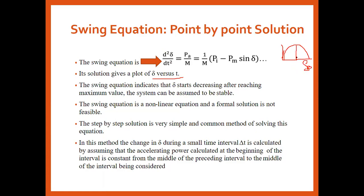We are getting the maximum power at delta_max, starting from delta_zero. This indicates the system is searching for a stable point. However, the swing equation is a non-linear equation, so a normal closed-form solution is not feasible.